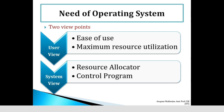The second important viewpoint is the system view — how the system can interact with the operating system. From the computer's point of view, the operating system is a program that is most intimate with hardware, and we can view an operating system as a resource allocator. A computer system has many resources, hardware and software, that may be required to solve a problem — like CPU time, memory space, file storage space, or IO devices. In that case, the operating system acts as a manager of all these resources.